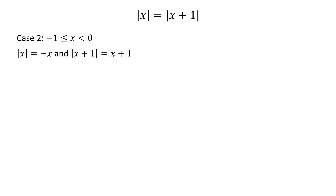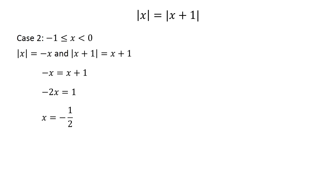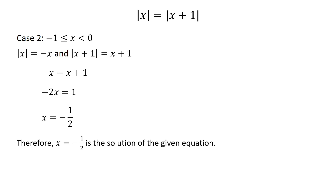Case 2: x greater than or equal to negative 1 and less than 0. For this interval, the equation becomes negative x equals x plus 1. This can be written as negative x minus x equals 1, which becomes negative 2 times x equals 1. This gives x equals negative one half. Therefore, x equals negative one half is the solution of the given equation.